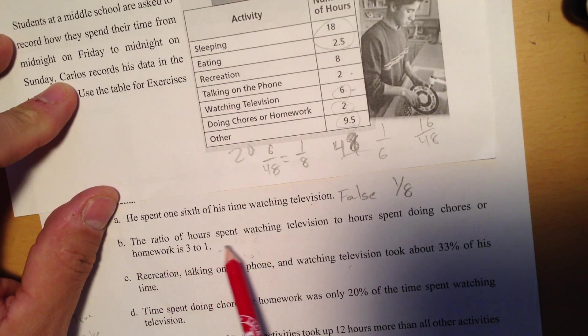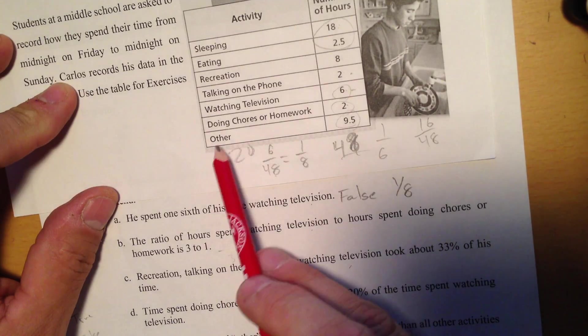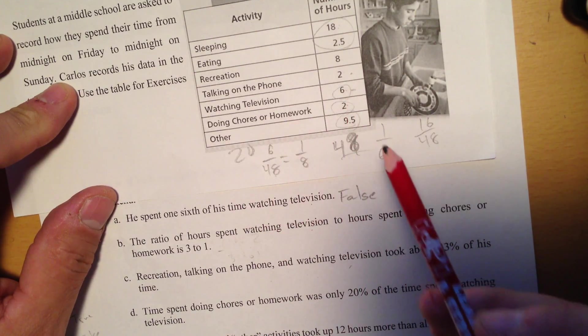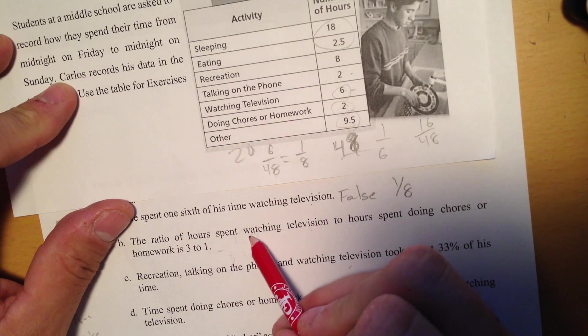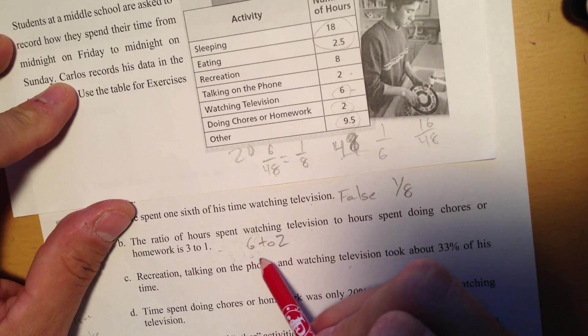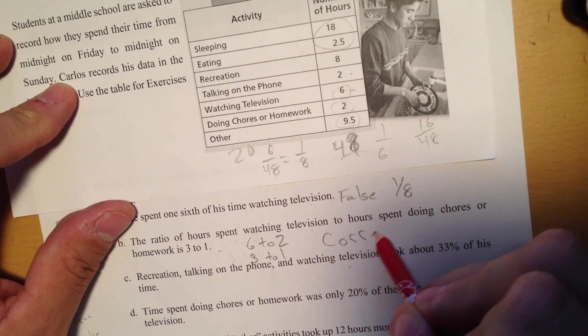B. The ratio of hours spent watching television to hours spent doing chores or homework. Chores or homework is 2 hours, watching television is 6. They said it's 3 to 1. So I'd have it 6 to 2, but I'm going to reduce. 2 goes into both of these. So that's 3 to 1. I'm going to say that's a correct statement.